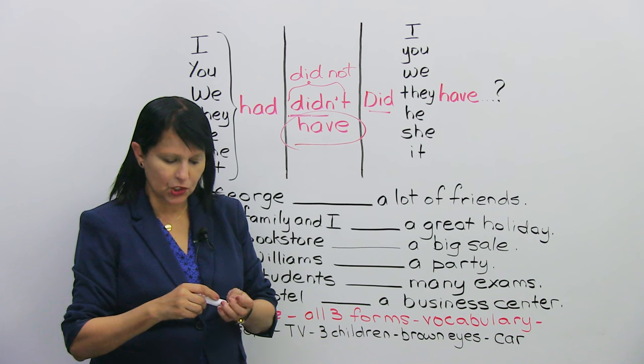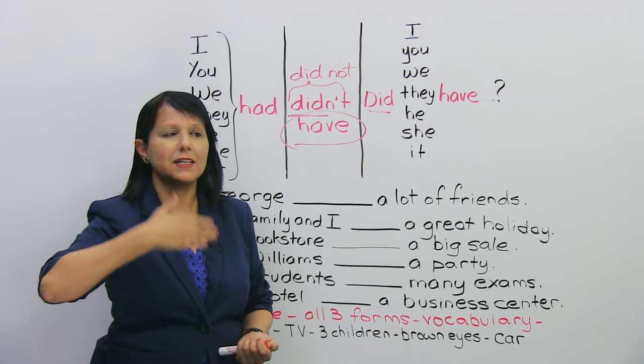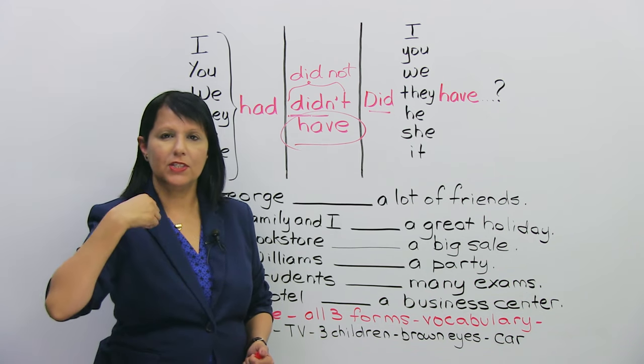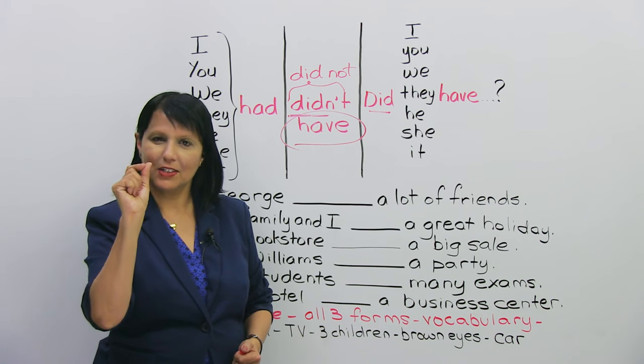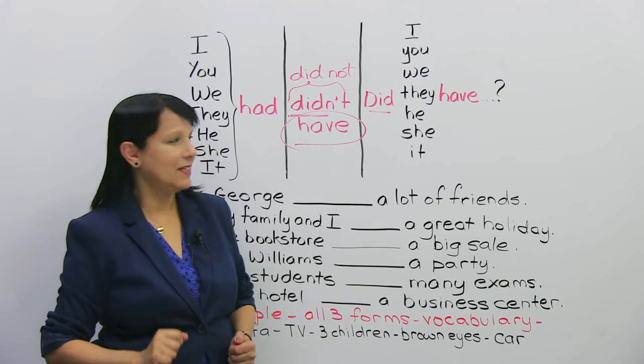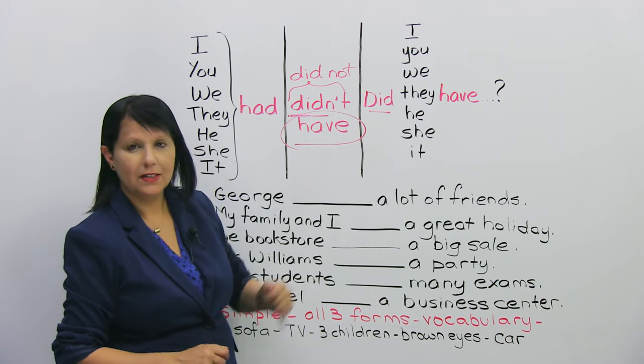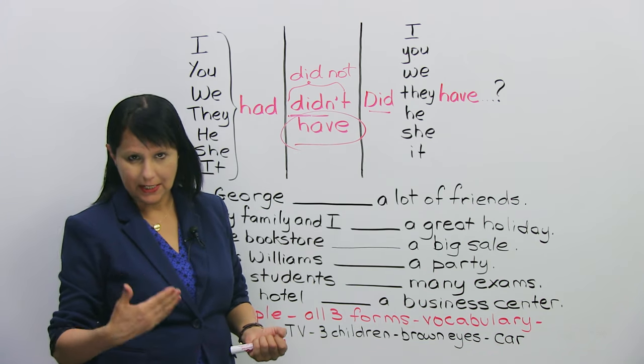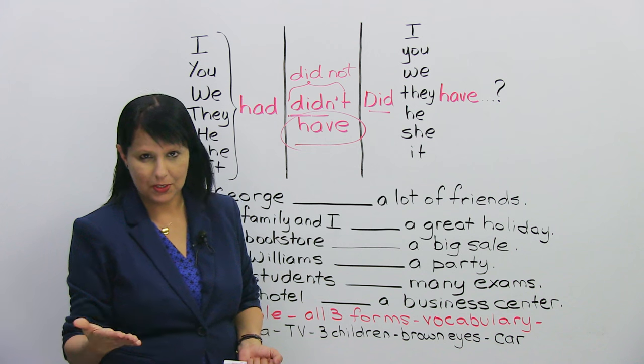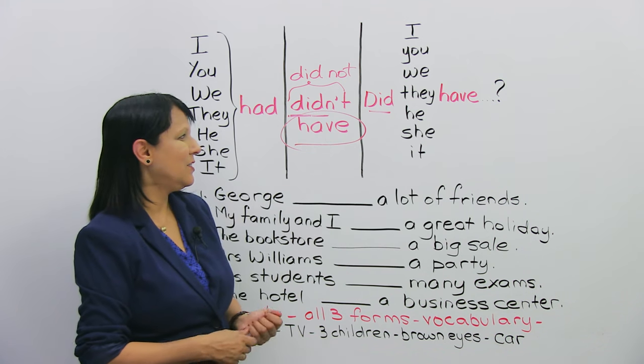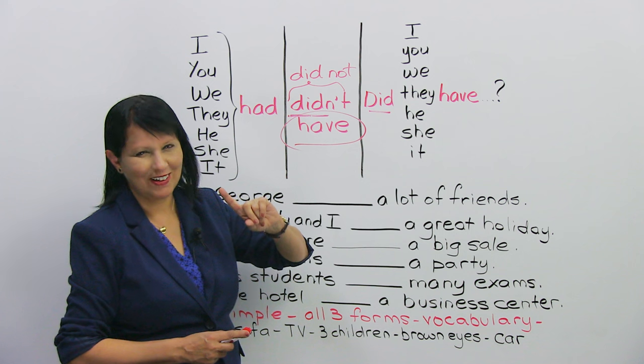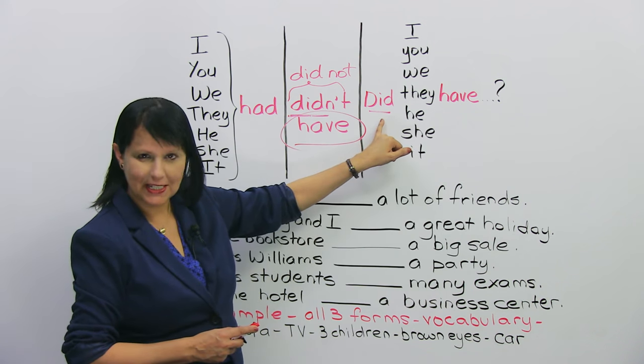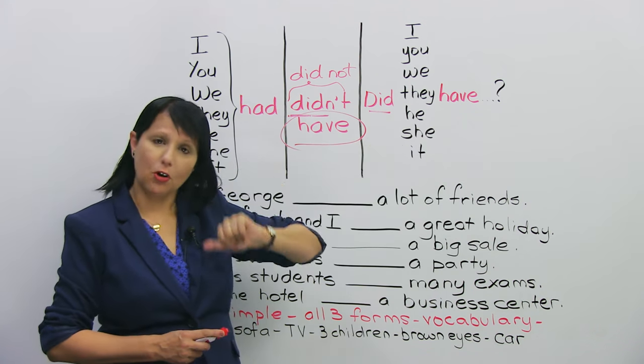But usually in conversation, we don't say, he did not have fun. We just say, he didn't have fun. That's the contraction, the short form. And here, we can use the word did, and that's what we usually use, and it's important to use it. You can't just say, you have fun? That would be wrong. Okay?